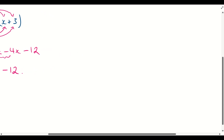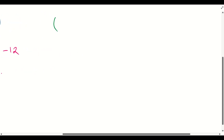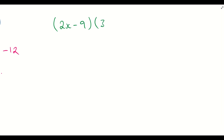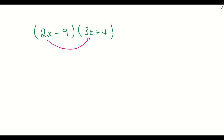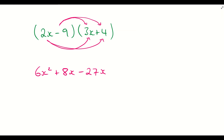Let's do another one — this time expanding (2x − 9)(3x + 4). Same principle applies, using our crab claws. Starting with 2x times 3x, that gives us 6x². Then 2x times positive 4 gives us plus 8x. Then minus 9 times 3x gives us minus 27x, and minus 9 times positive 4 gives us minus 36. Grouping the x terms: 6x² − 19x − 36.